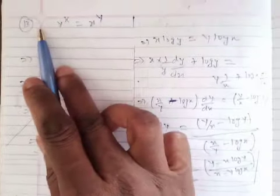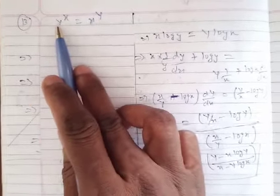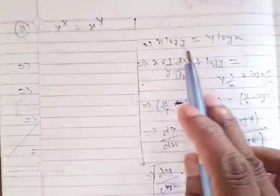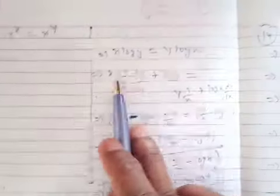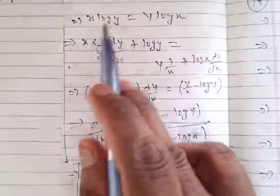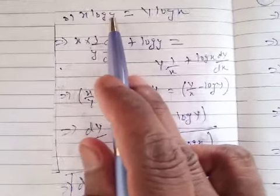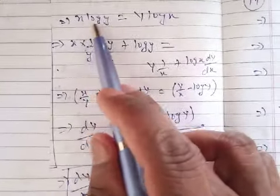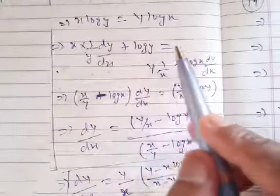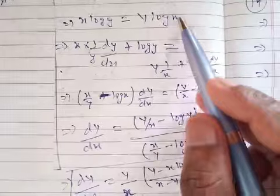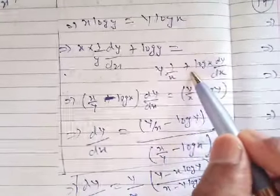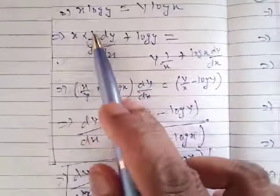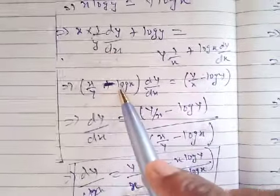Moving to question number 13, which is similar to 12: y raised to x equals x raised to y. Apply log on both sides: x log y equals y log x. Using u into v form: x constant times derivative of log y which is 1 by y times dy by dx, plus log y times derivative of x which is 1, equals y constant times derivative of log x which is 1 upon x, plus log x times derivative of y which is dy by dx.